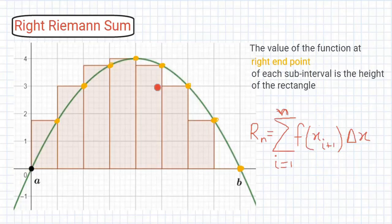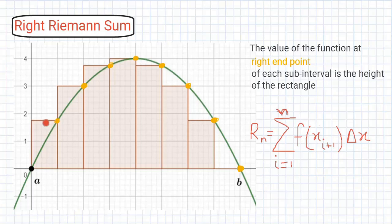For the Right Riemann sum, if the value of the function at the right endpoint of each subinterval is the height of the rectangle, we call it the Right Riemann sum. For the first subinterval, the right endpoint defines the height of the rectangle, and similarly for the remaining subintervals. The formula is given by R_n = summation i equal to 1 to n of f(x_{i+1}) times delta x.